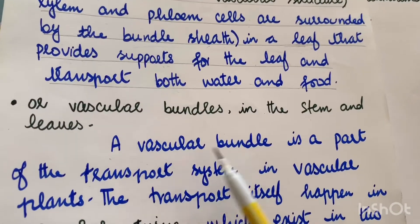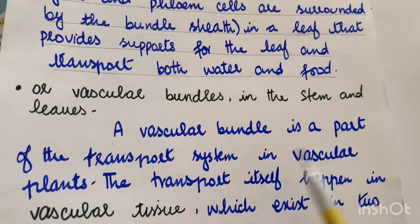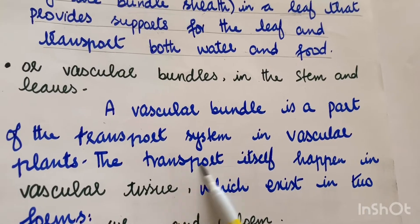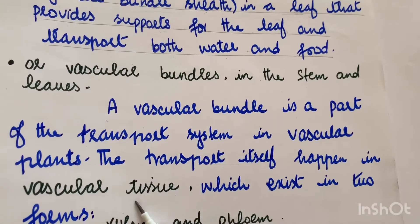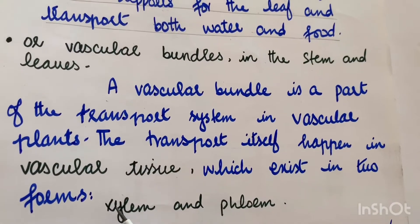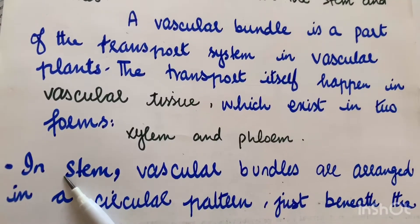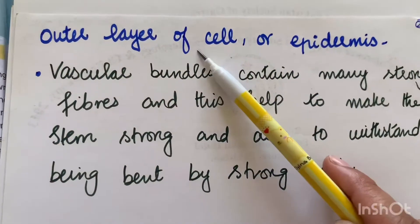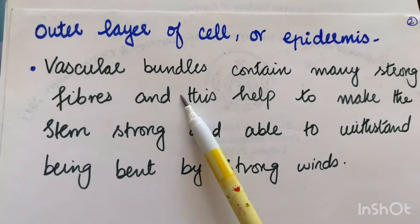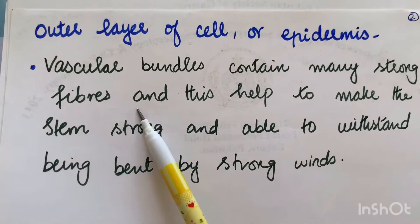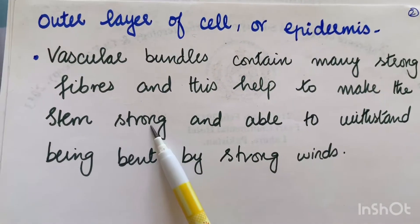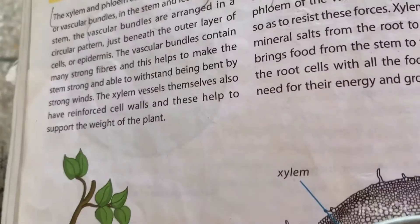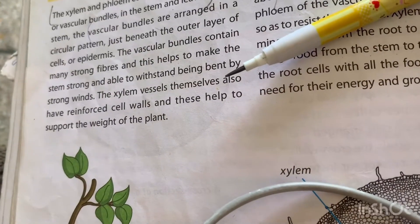Xylem and phloem cells are arranged in veins or vascular bundles in the stem and leaves. A vascular bundle is a part of the transport system in vascular plants. Transportation happens in the vascular tissue, which exists in two forms: xylem and phloem. In the stem, the vascular bundles are arranged in a circular pattern just beneath the outer layer of cells — the epidermis. The vascular bundles contain many strong fibers, which help make the stem strong and able to withstand being bent by strong wind.